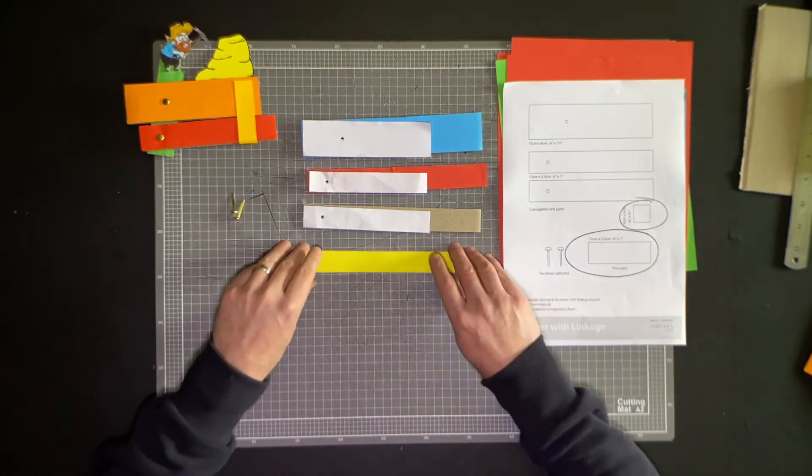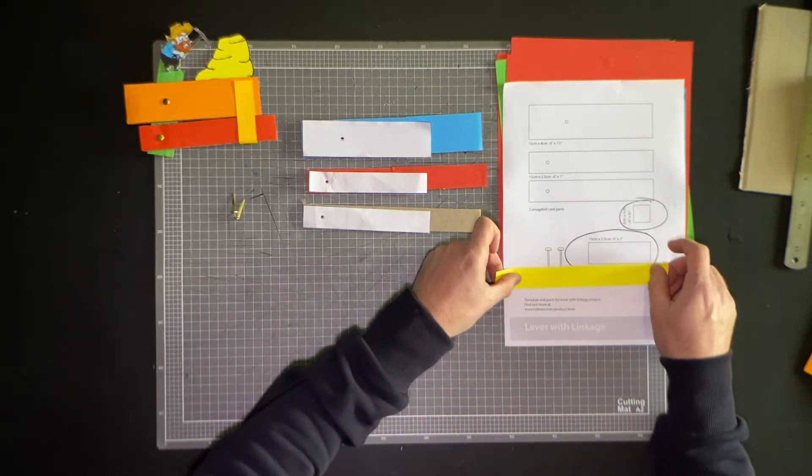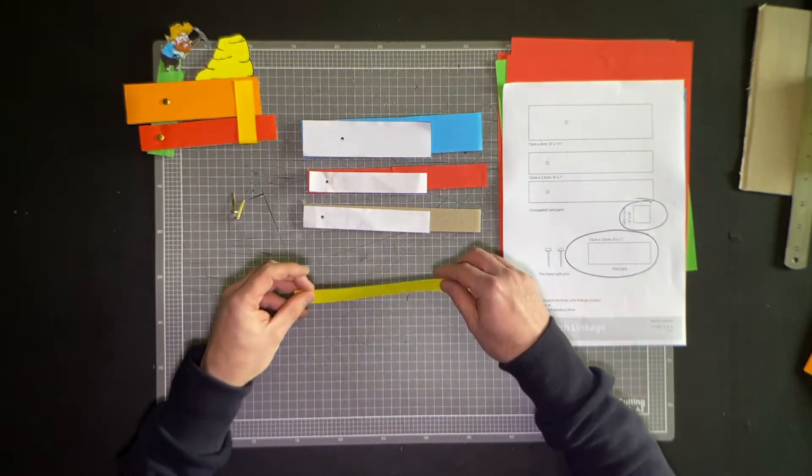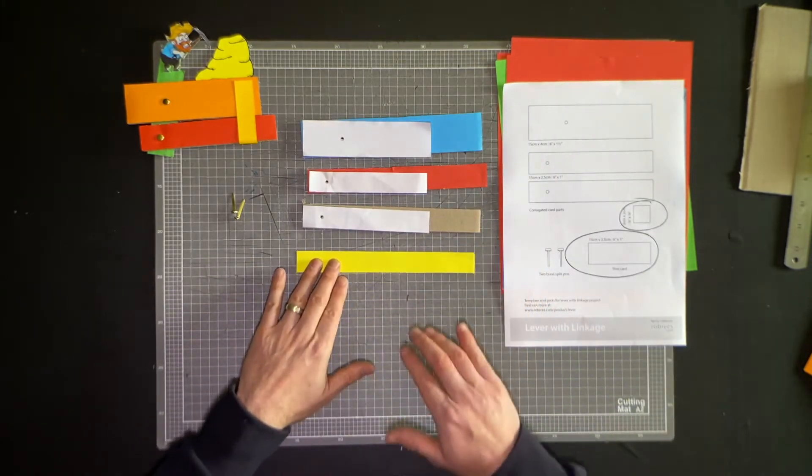This piece here, I've actually made a lot longer. You can see it's longer than that, and I'll show you why I've done that. That's just made out of the colored paper, not out of the thicker cardboard.